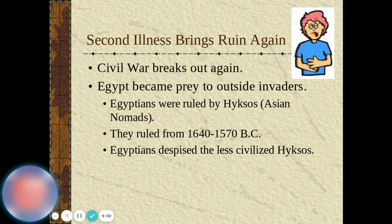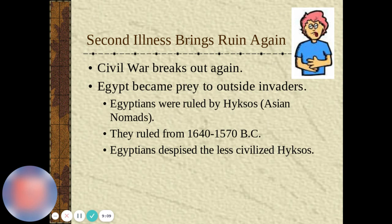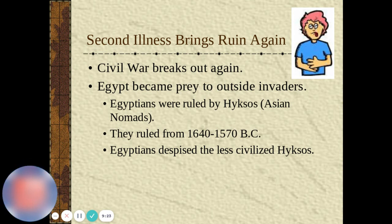Civil war broke out again, and Egypt became prey to outside invaders. Egyptians were ruled by Asian nomads — the Hyksos — who ruled from 1640 to 1570 BC. Egyptians despised the less civilized Hyksos, who were trying to take their land.